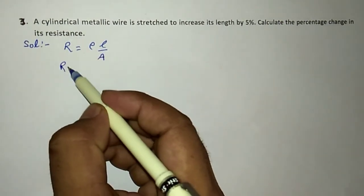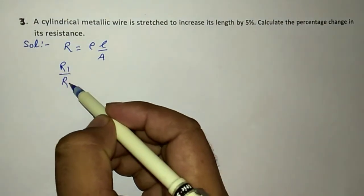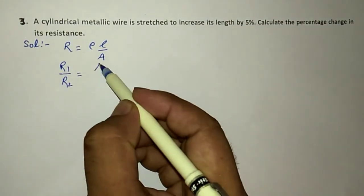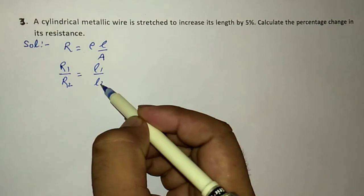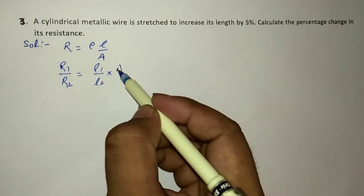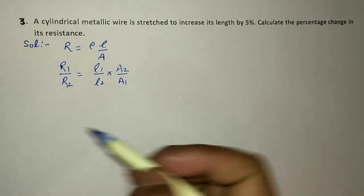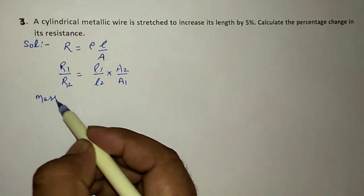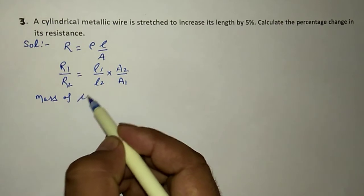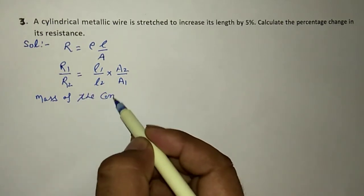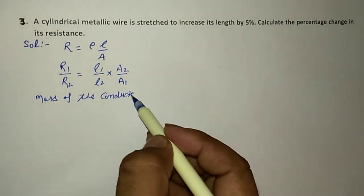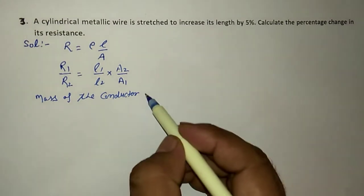The ratio R1/R2 equals (L1/L2) multiplied by (A2/A1). As the mass of the conductor remains constant,